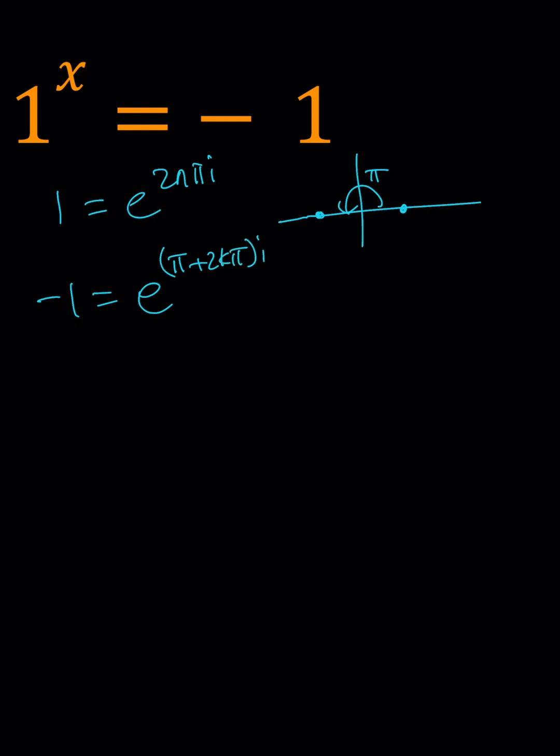And then, we're just going to substitute e to the power, and obviously this can be written as e to the power 2k plus 1 pi i. Let's go ahead and plug it in. e to the power 2n pi i, raise it to the power x, and that equals the following.